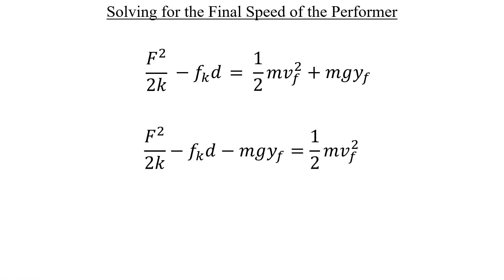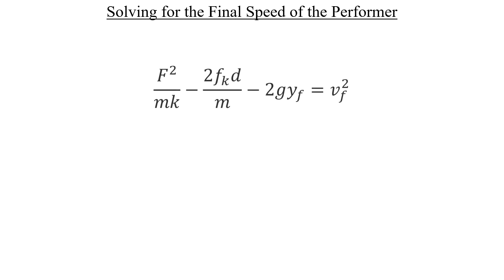We can multiply both sides by two, divide both sides by the performer's mass, and then take the square root of both sides to get the final velocity that we need.